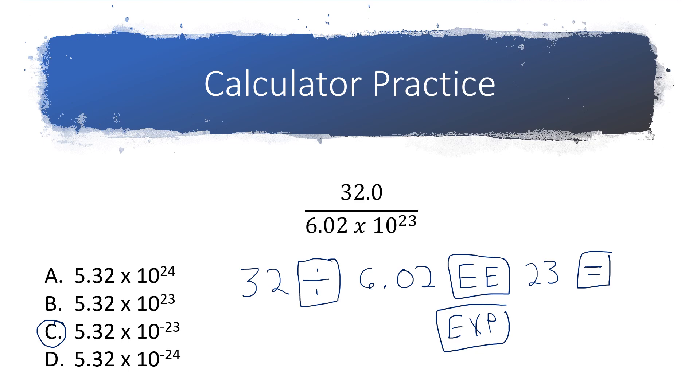If you go and hit times and 10, you're going to start being off in your power of 10. And even instead of having this negative 23 exponent, you might end up with a positive 23 or even a positive 24 exponent. So double check, try it again, see if you can get this number calculated correctly with your calculator using the EE or the EXP key.